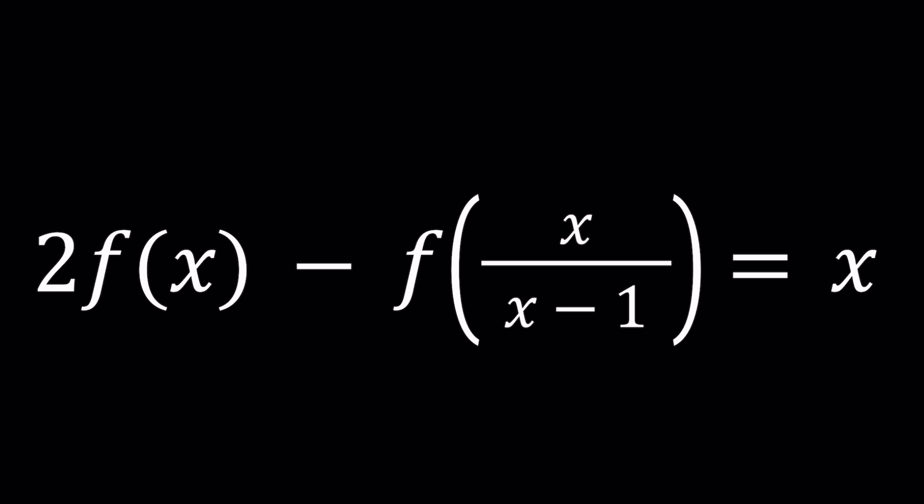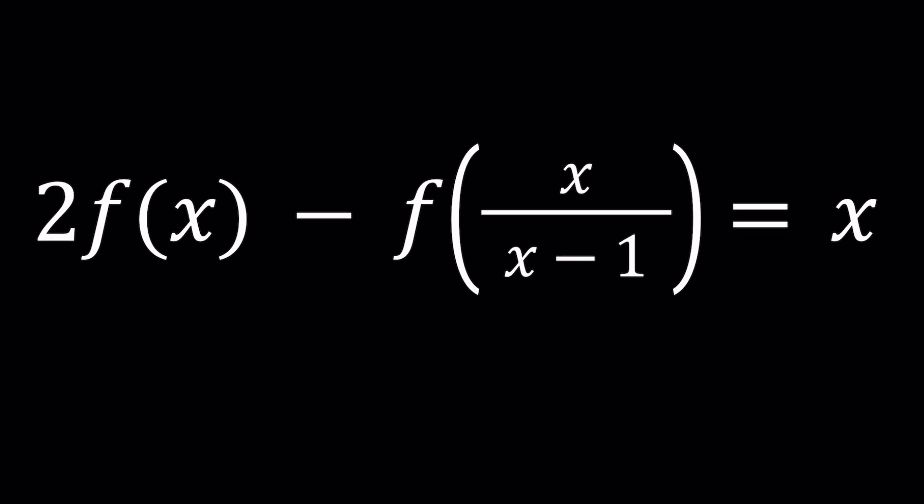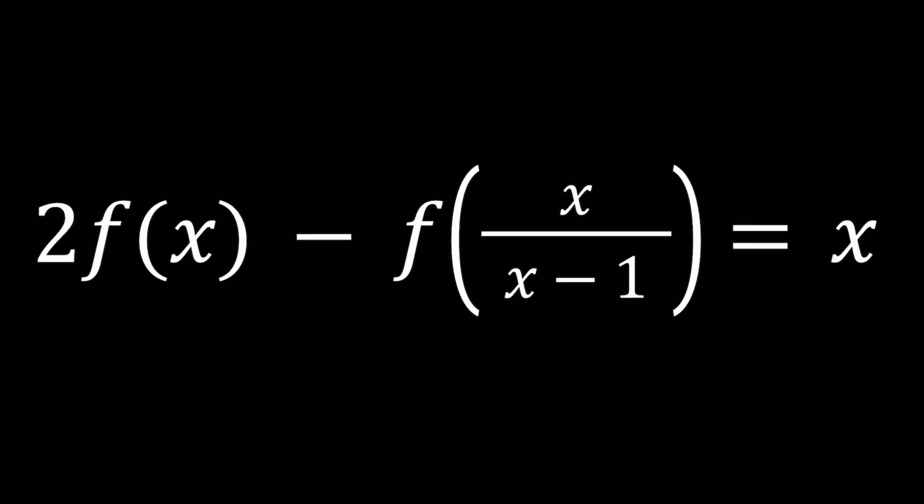Obviously x cannot be 1 as you can see here. Is f of 1 defined? You can find out easily by setting x over x minus 1 equal to 1. You can figure it out yourself. So let's see how we can find the function f of x from here.